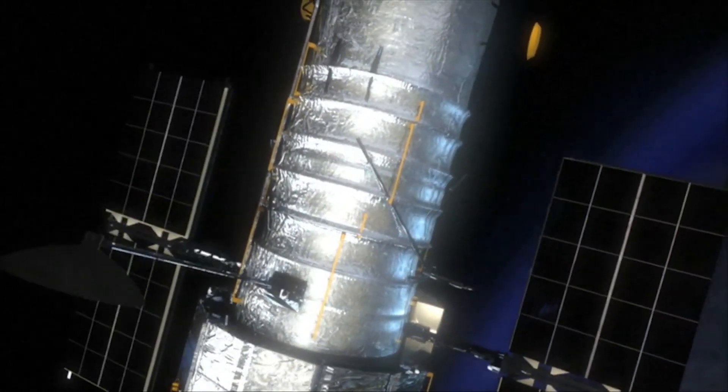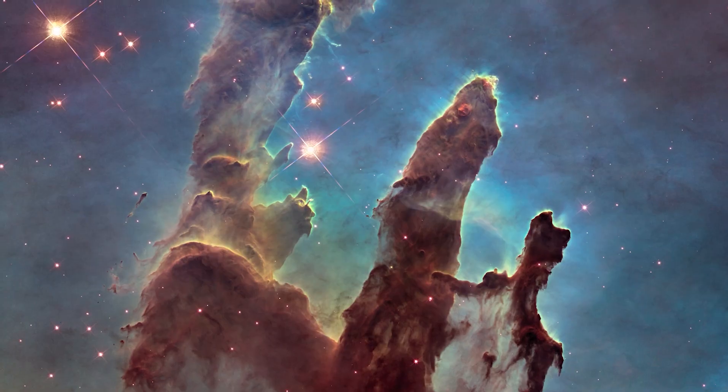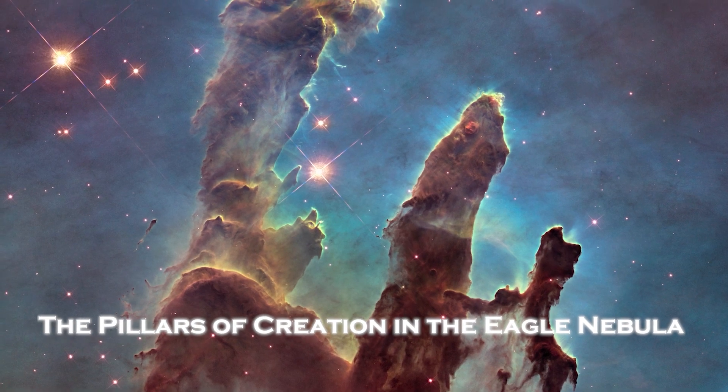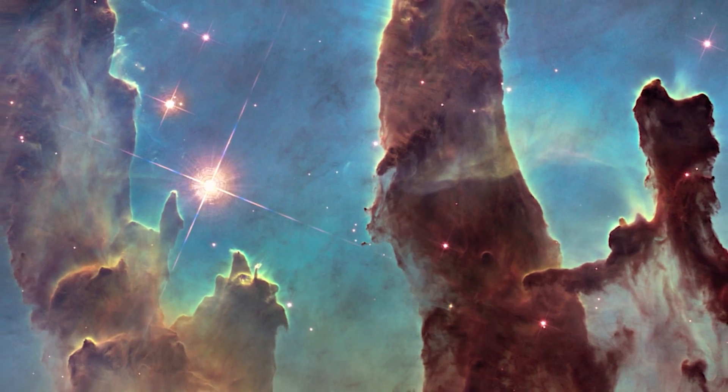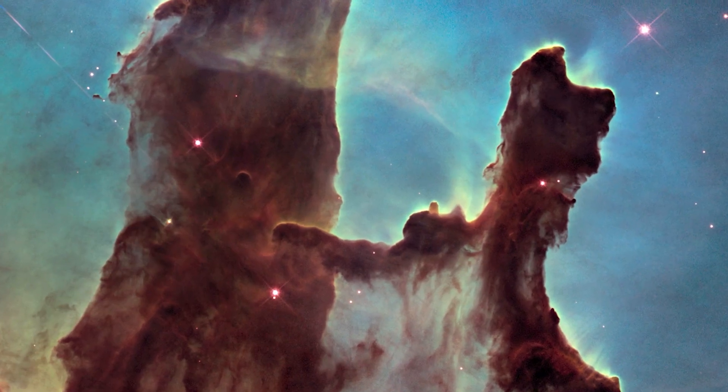One of the Hubble Space Telescope's most recognizable sites has long been the Pillars of Creation in the Eagle Nebula. This structure was visible to the telescope that primarily detects visible light, but the processes of creation within it were not.